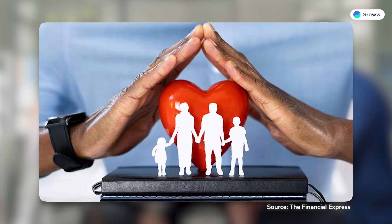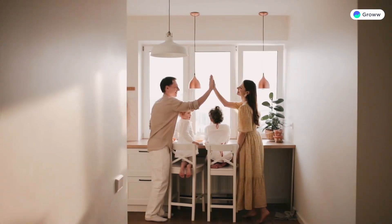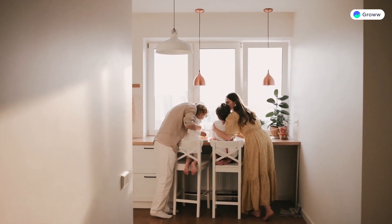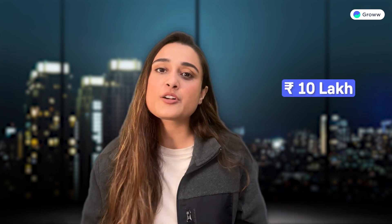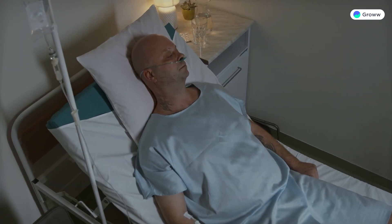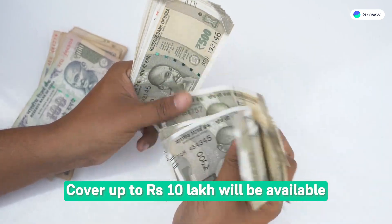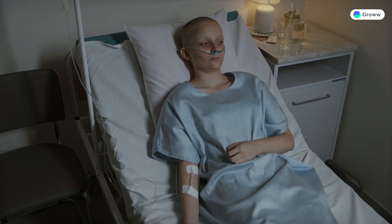Now let's talk about family floater health insurance plan. There is one policy in which the whole family gets coverage. The premium is one and the cover is also one. For example, if you have a 10 lakh family floater plan, then if any family member is admitted to hospital, they will get coverage of up to 10 lakhs.